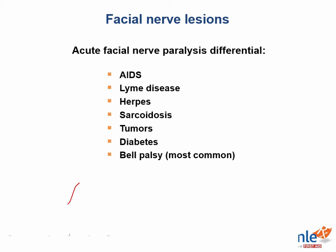Bell's palsy is usually treated with prednisone, a typical steroid. However, in most cases that result in paresis — if the paralysis is not complete — it will resolve on its own.